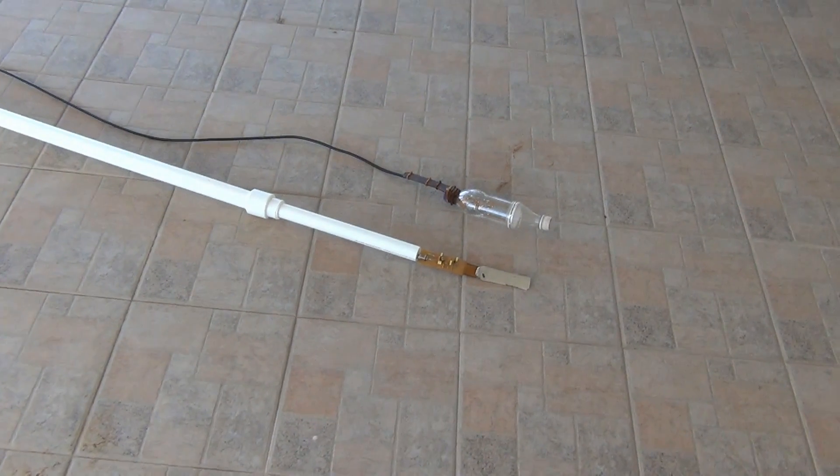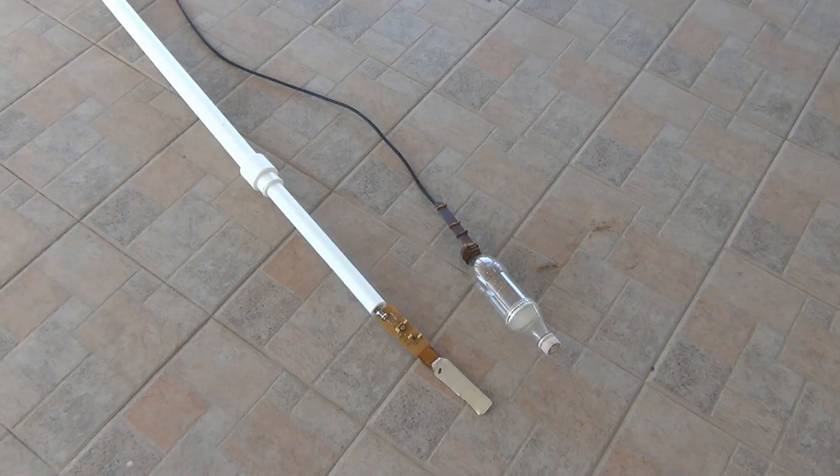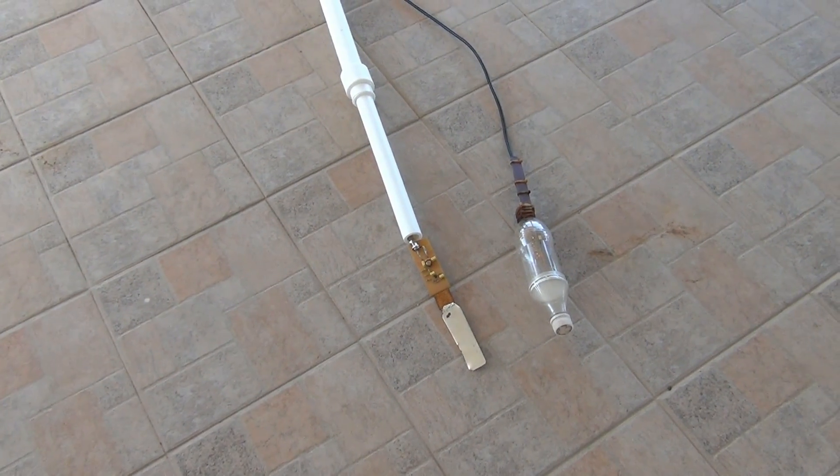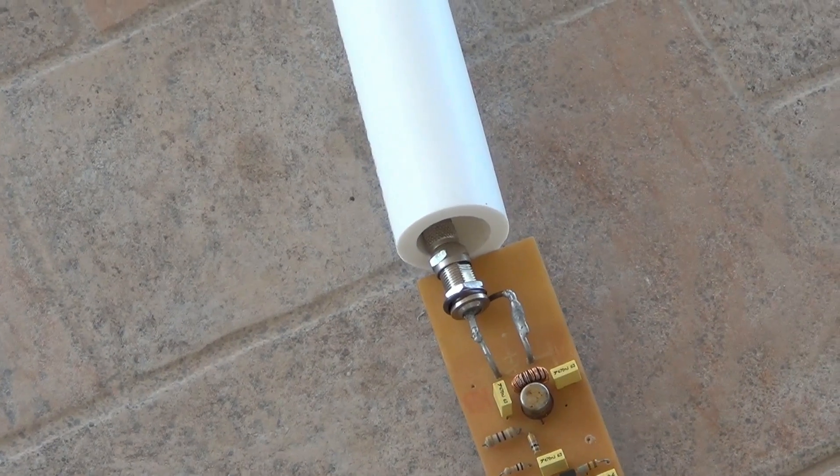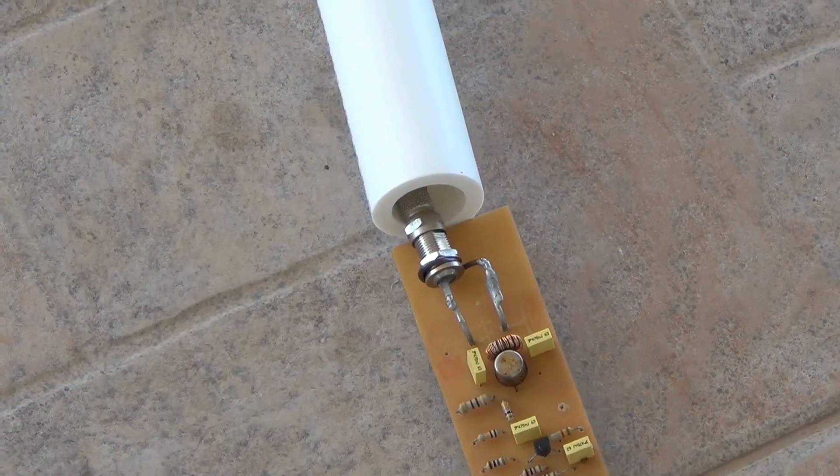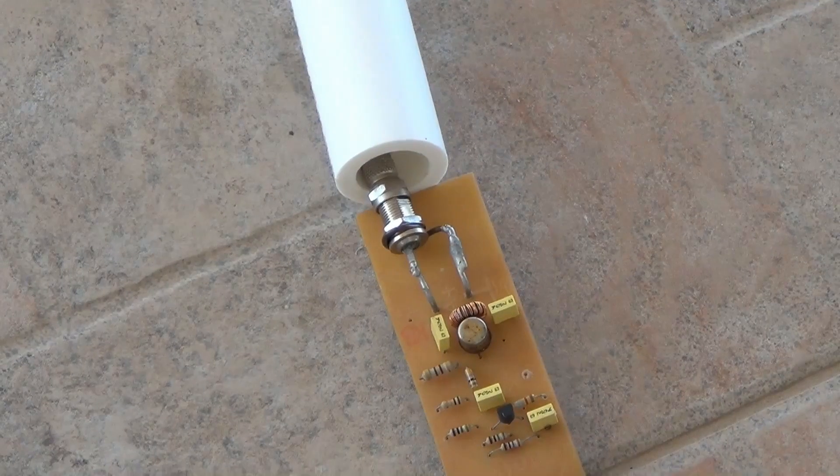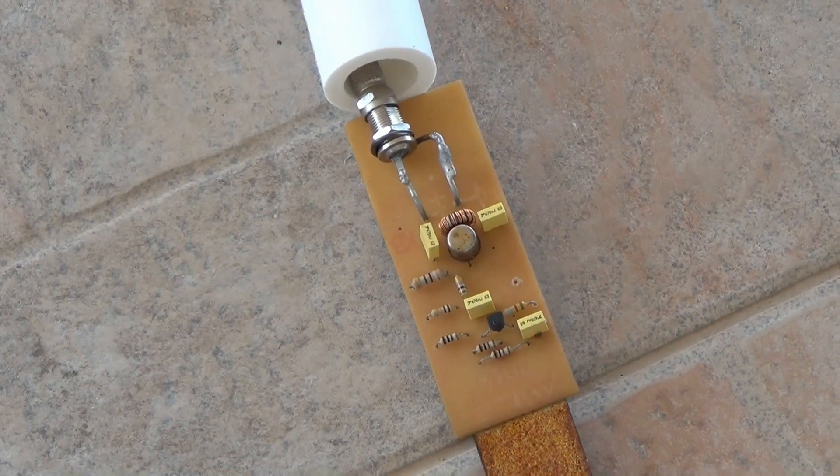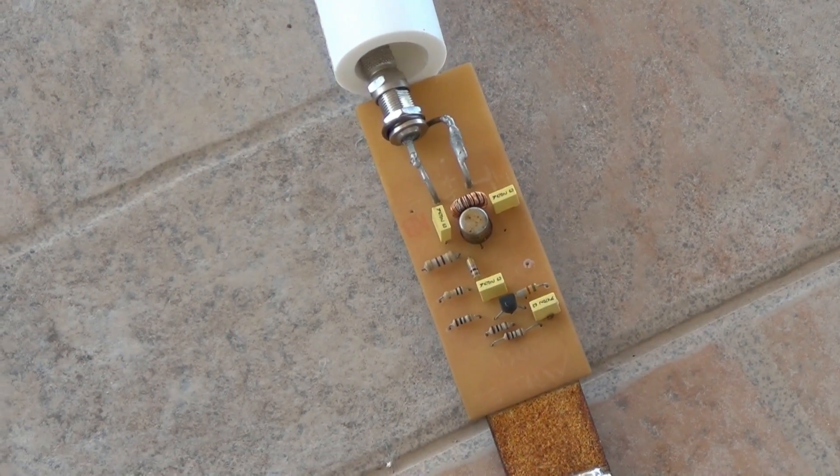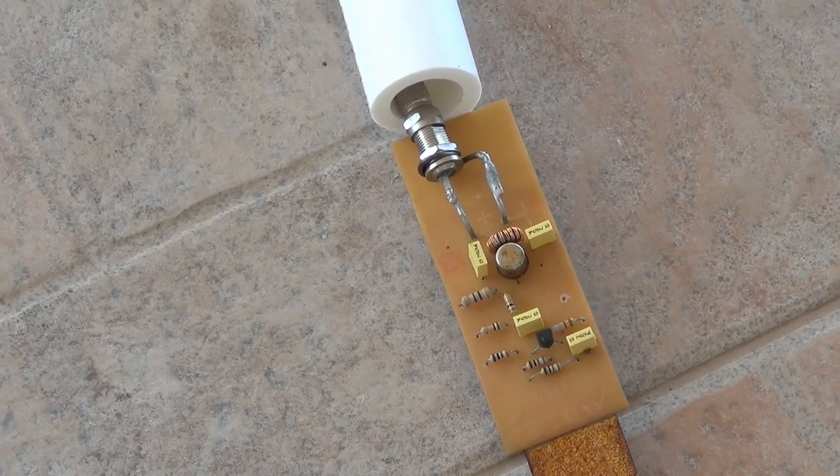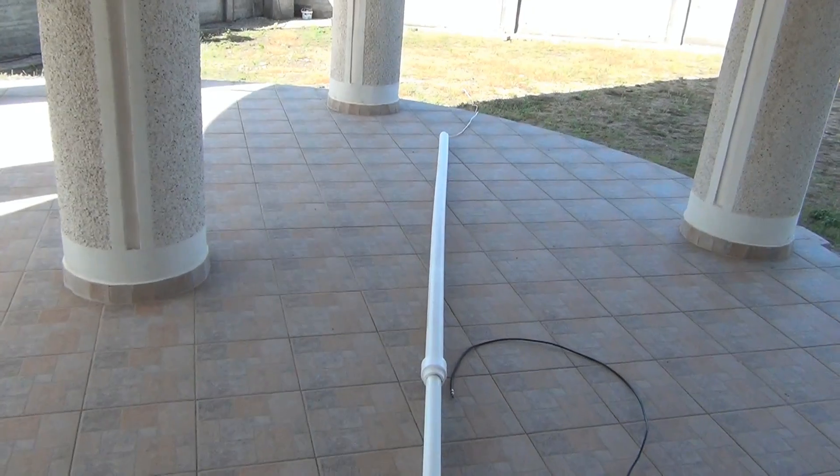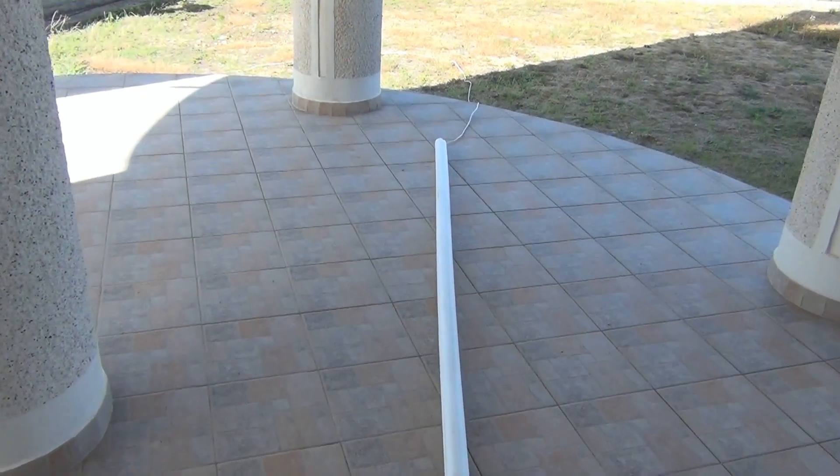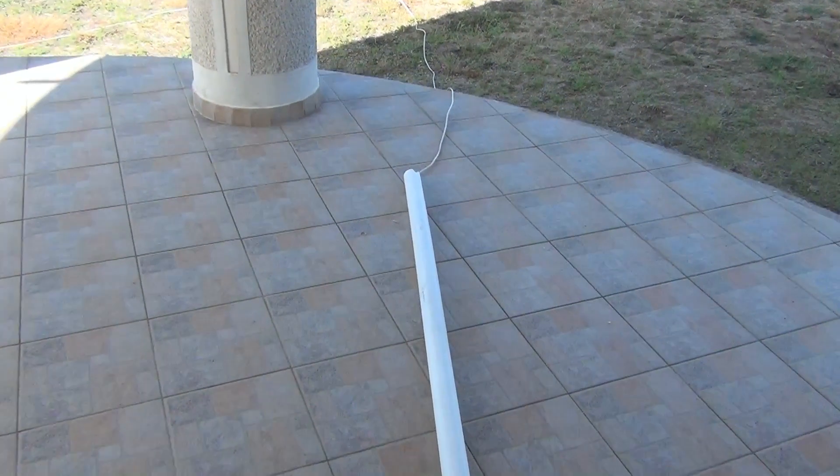The coaxial cable goes through the pipes to the MiniWhip antenna, and the MiniWhip antenna is powered through the coaxial cable from BST and power supply.